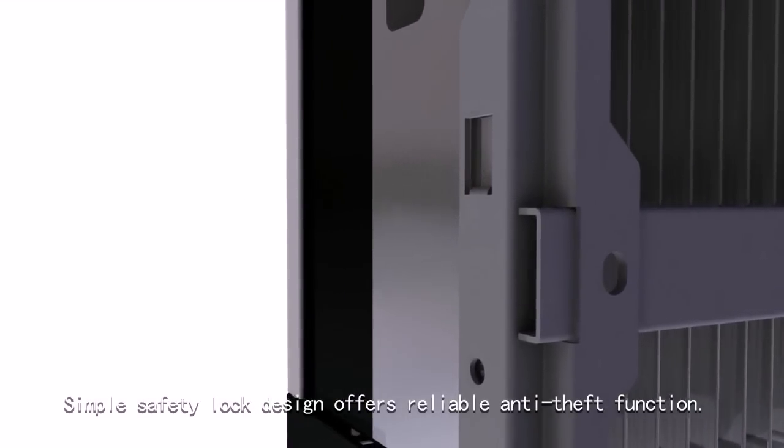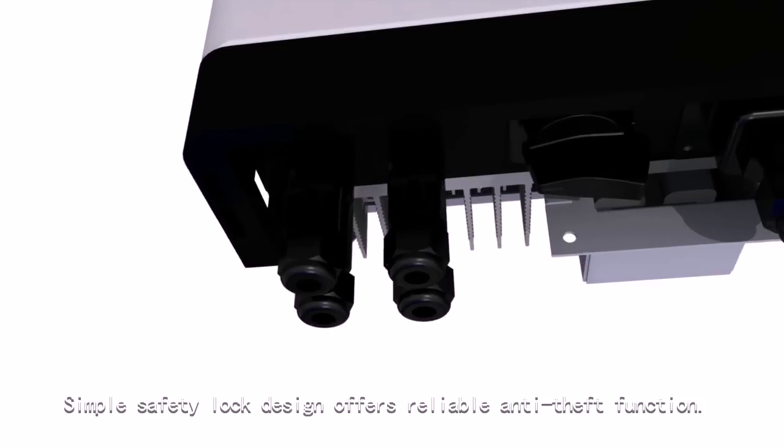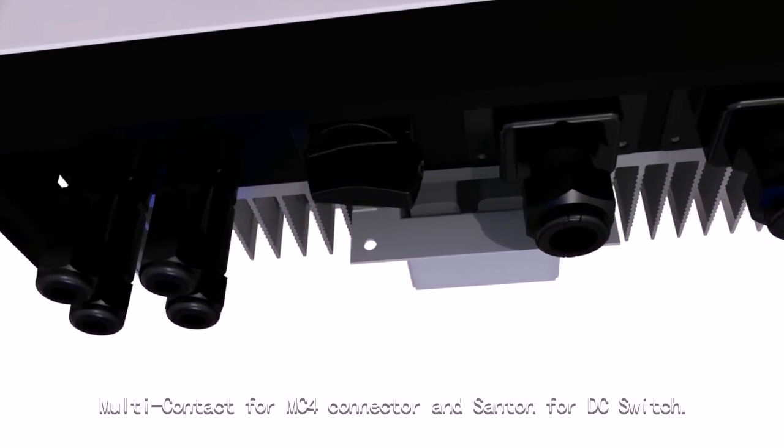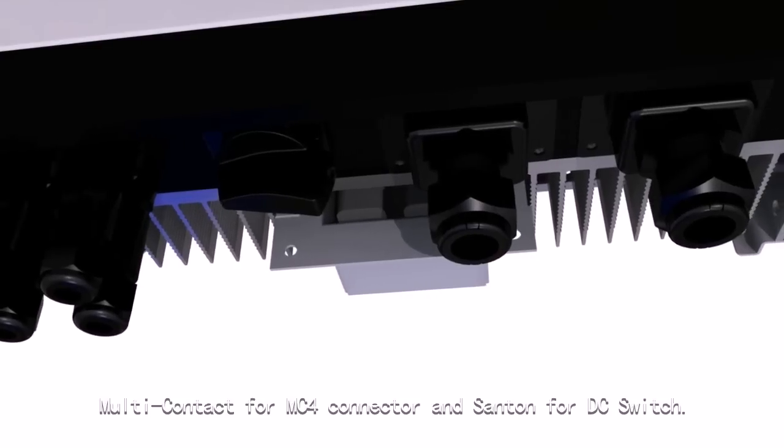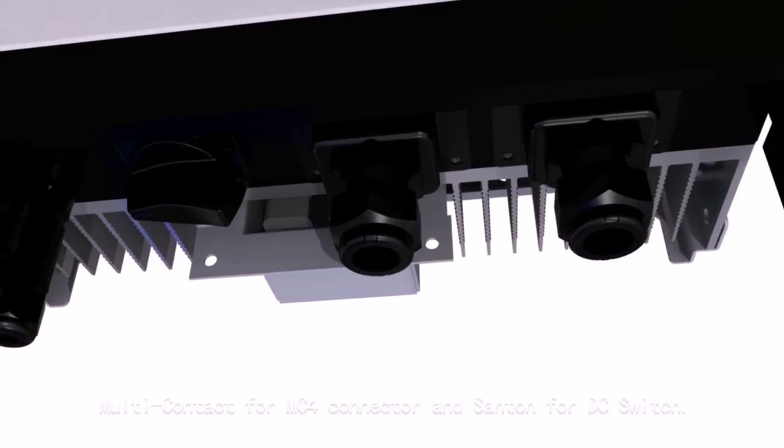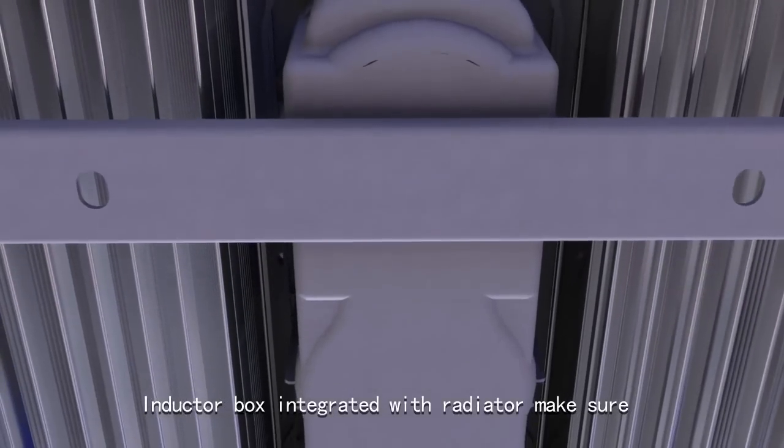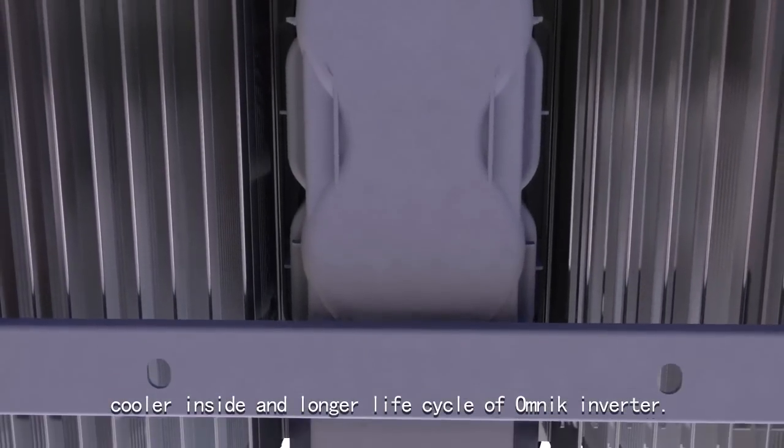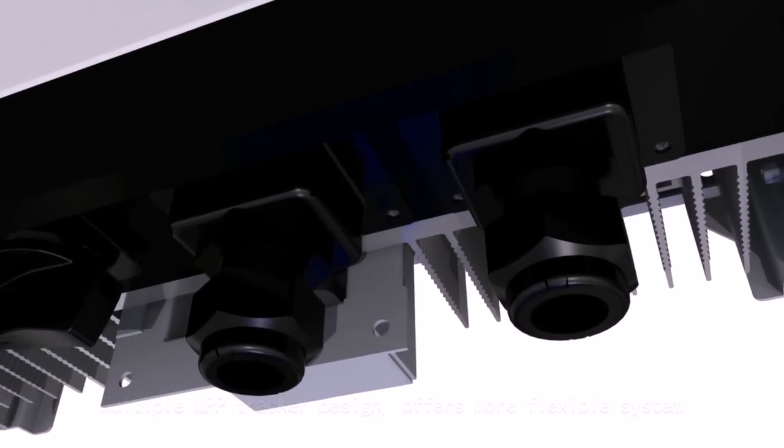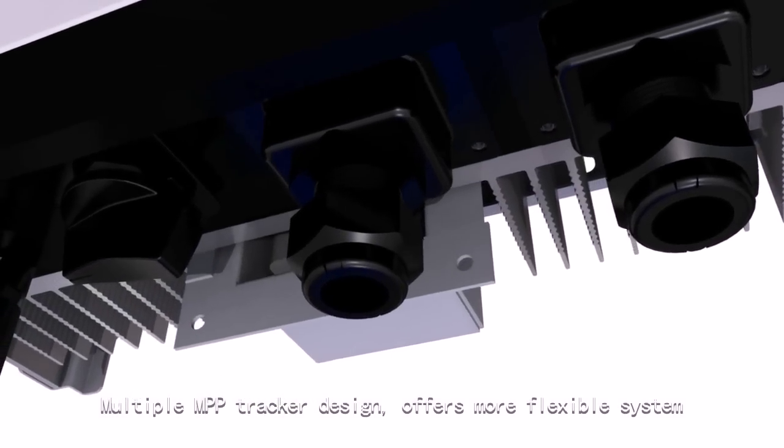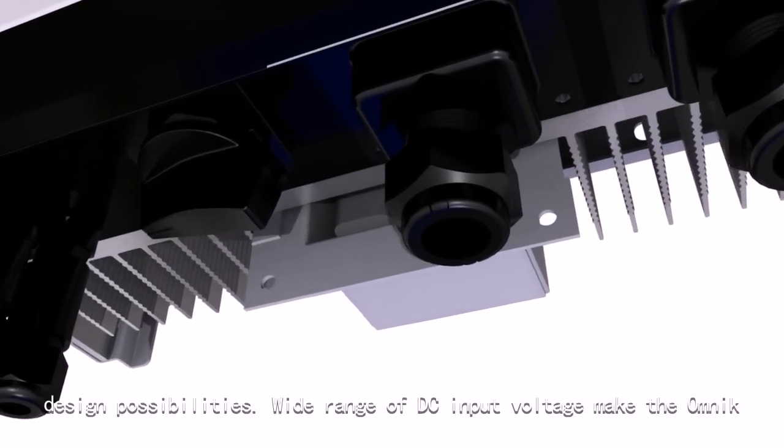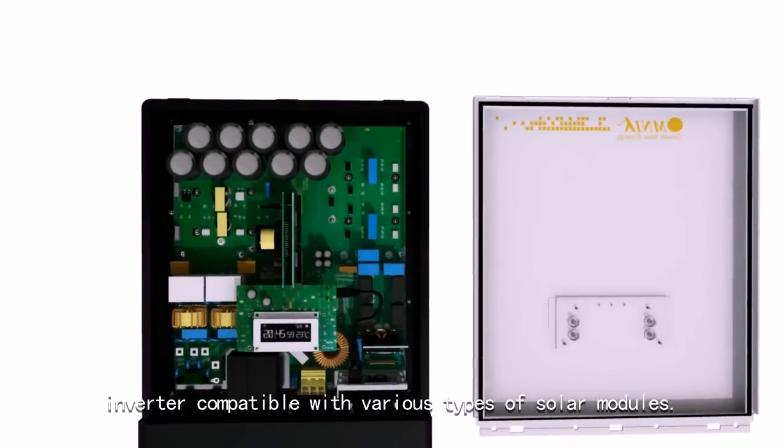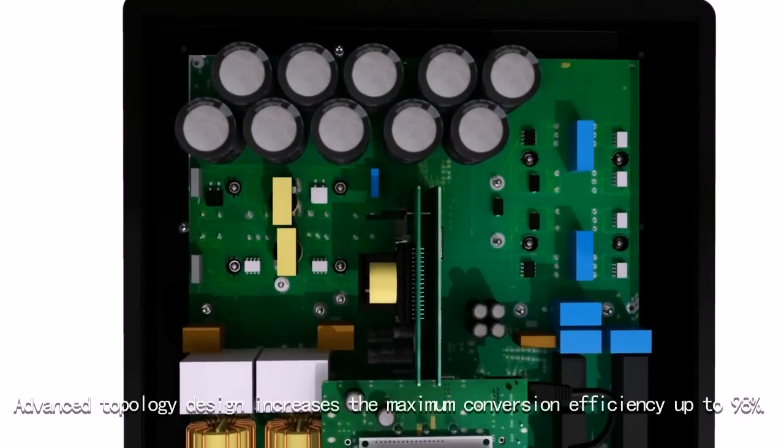Simple safety lock design offers reliable anti-theft function. Reliable components from world-top brands such as Multi-Contact for MC4 connector and Santon for DC switch ensure quality. Inductor box integrated with radiator ensures the most heated part has the best radiating condition, keeping the inside cooler and extending the life cycle. Multiple MPP tracker design offers more flexible system design possibilities. Wide range of DC input voltage makes the Omnic inverter compatible with various types of solar modules. Advanced topology design increases maximum conversion efficiency up to 98%.